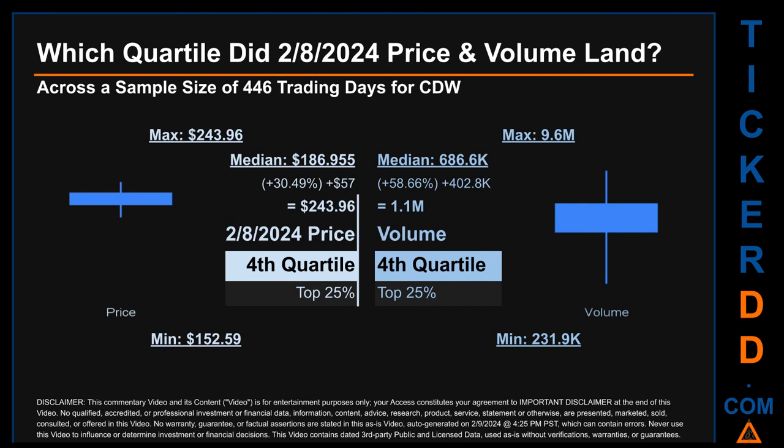Hello, my name is Maria. Which quartile did February 8th, 2024 price and volume land in across a sample size of 446 trading days? The maximum end-of-day price for CDW was $243.96 while the minimum was $152.59. The February 8th price of $243.96 landed within the fourth quartile, meaning it was within the top 25% of all sampled end-of-day prices. The day's volume also landed within the fourth quartile — top 25% — with a max daily volume of 9.6 million and a minimum of 231,900.